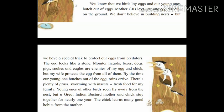By the time our young one hatches out of the egg, the rains arrive. There is plenty of grass swarming with insects — fresh food for my family. Plenty means a large quantity; swarming means in large numbers. So when the young one hatches, they get fresh grass and insects, which are easily available in large quantities during the rainy season.